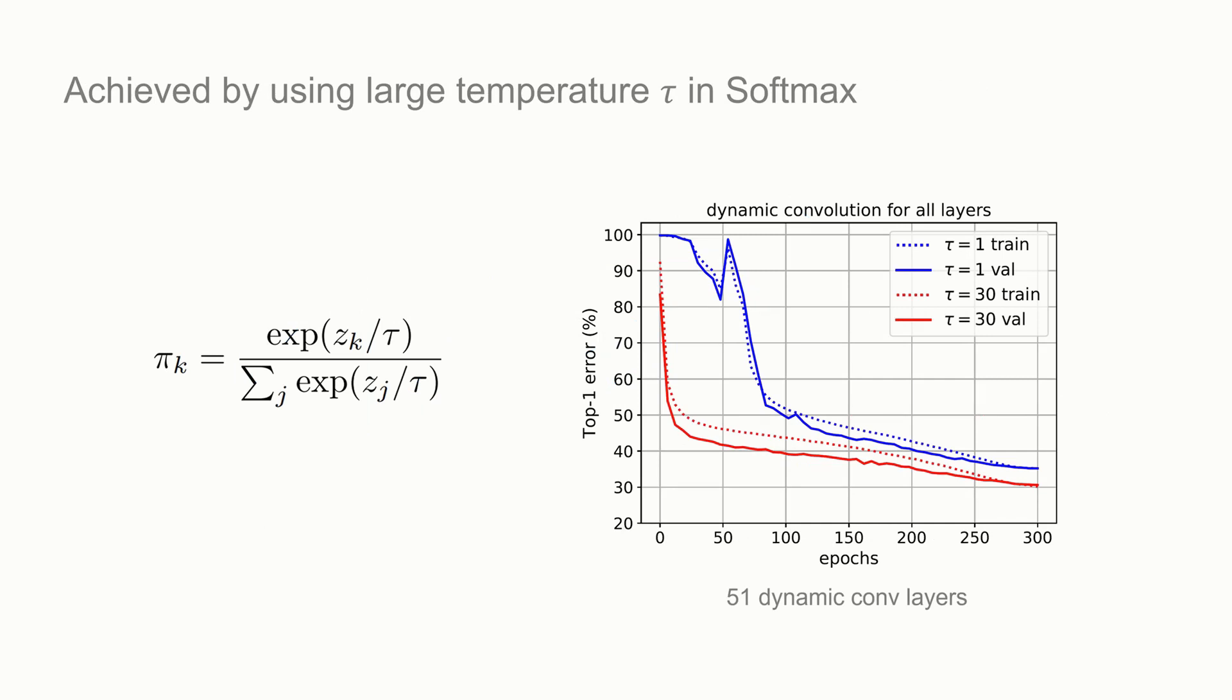This figure compares τ equal to 1 and τ equal to 30 for a network with 51 dynamic convolution layers. The training converges slowly when τ equals 1, but converges much faster when τ equals 30. In practice, we found that temperature annealing from 30 to 1 is even better.